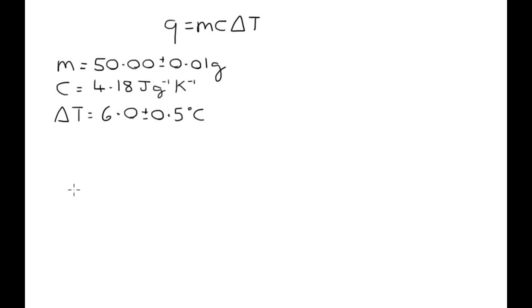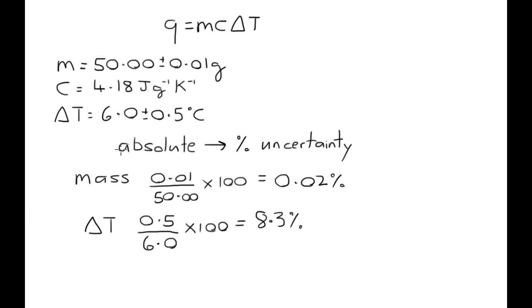Okay, so why don't we start by changing the absolute uncertainty which is this here to the percentage uncertainty. Okay, so for mass it's 0.01 divided by 50.00 times 100 and that gives us a percentage uncertainty of 0.02%.